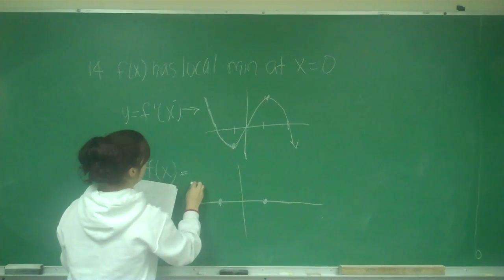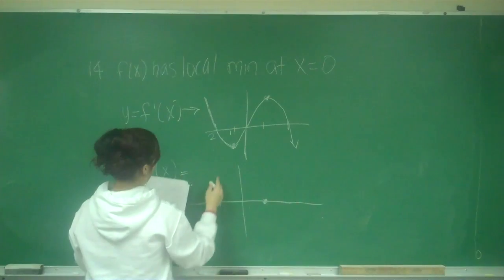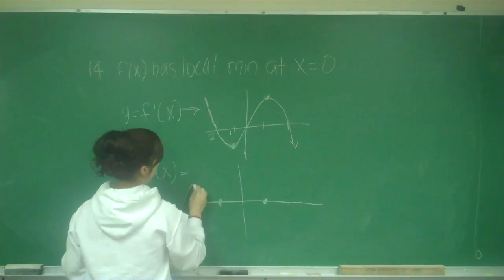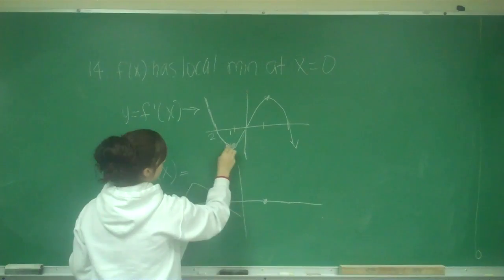And then from 2 to 1, it's below the x-axis, so this is all going to be a negative slope all the way to 0, because it's below the x-axis here.